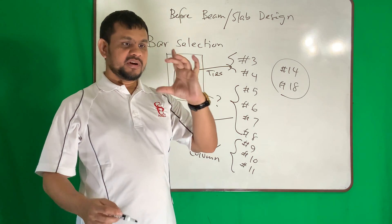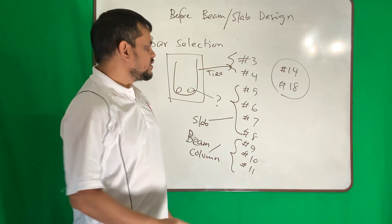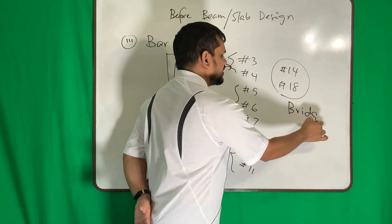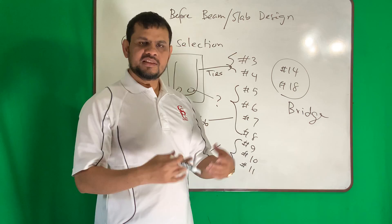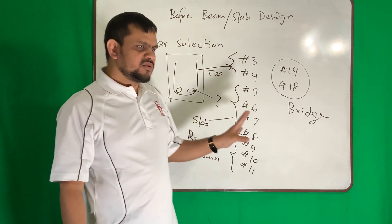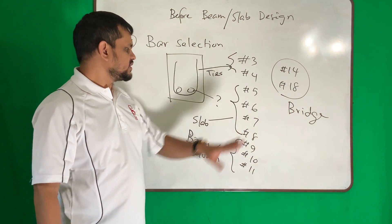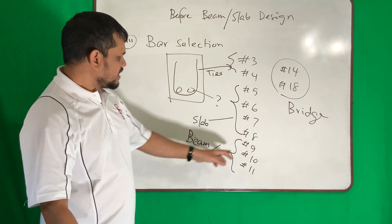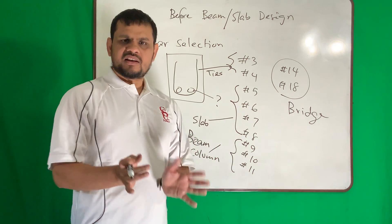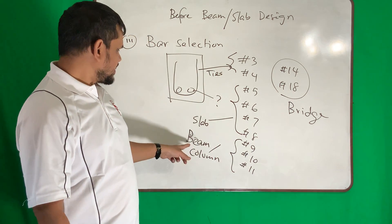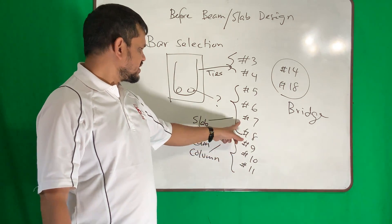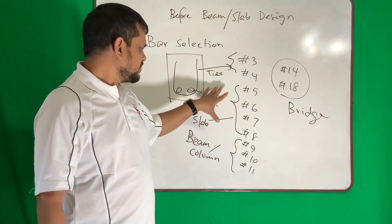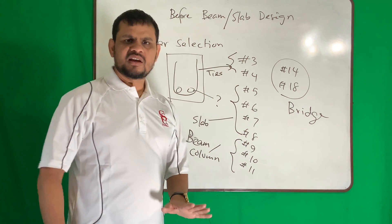Bars #14 and #18 are difficult to bend, so we try to avoid them in normal structures — only use them where huge reinforcement is needed, like in bridges. Even #11 is better to avoid because it's very difficult to bend. Using say #9 or #10 for slabs is technically fine, but typically people follow these common practices.